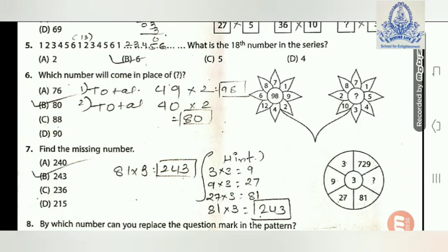Question 5: The series is one, two, three, four, five, six — repeating. What is the 18th number? The series repeats every six terms: one, two, three, four, five, six; one, two, three, four, five, six; one, two, three, four, five, six. So the 18th number is six. Option B is right.